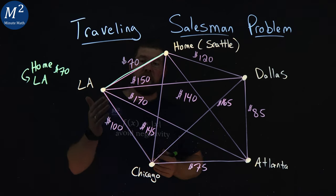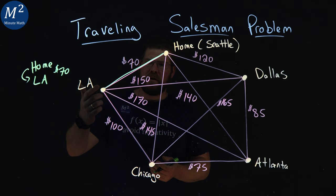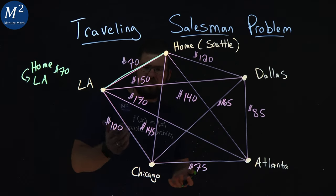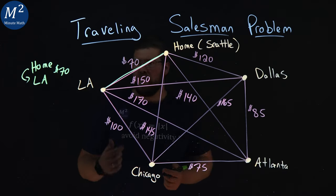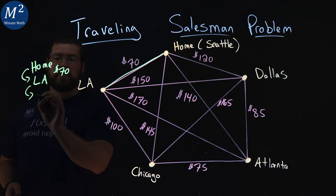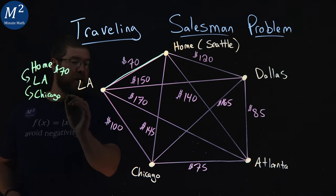Then from LA, there are many different paths that we can take. But the cheapest one so far just looks like it's going to Chicago. So from LA, we're going to go to Chicago. And that cost was $100.